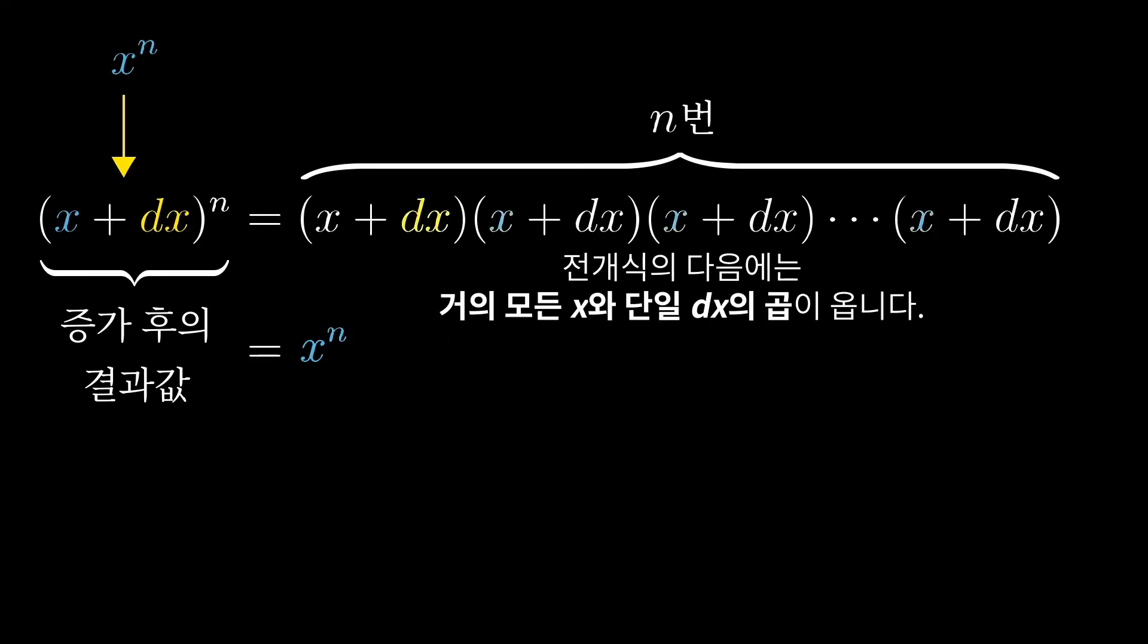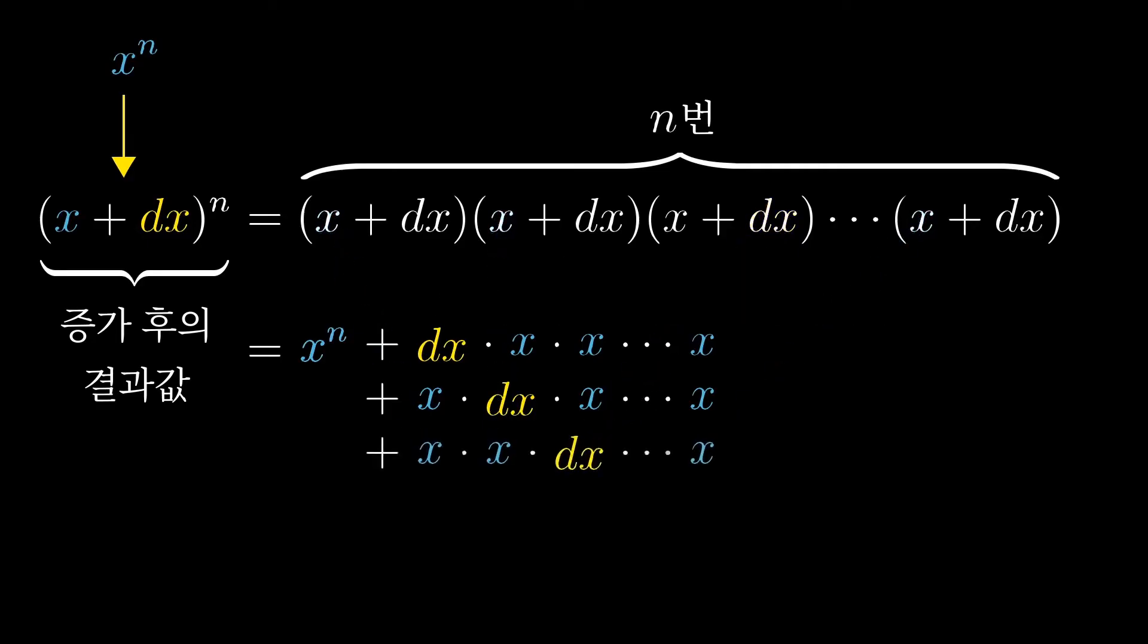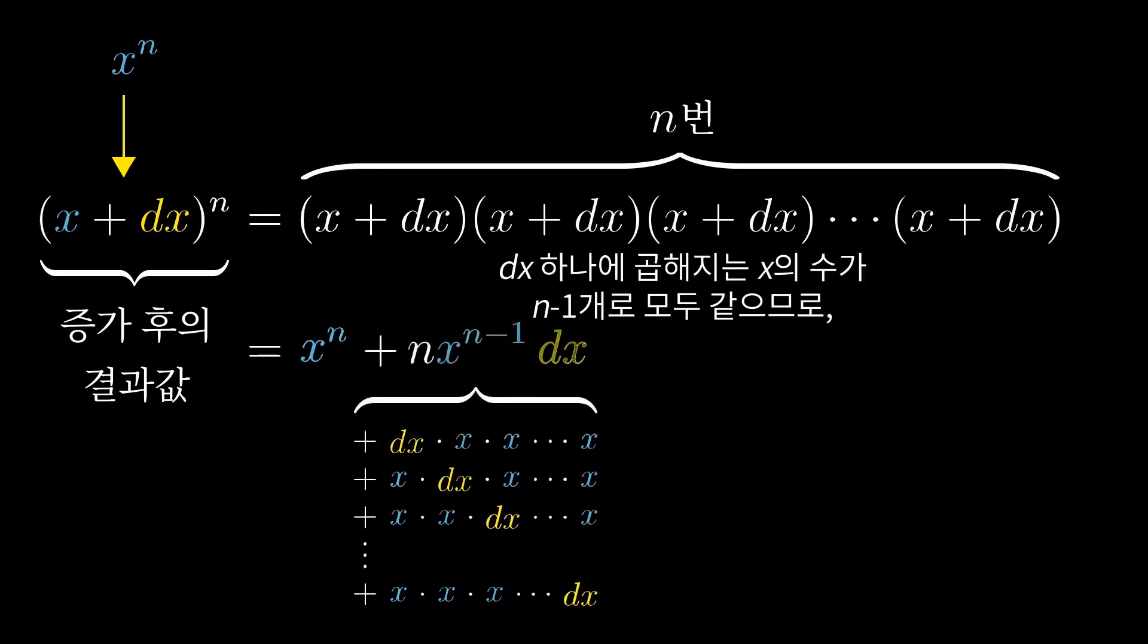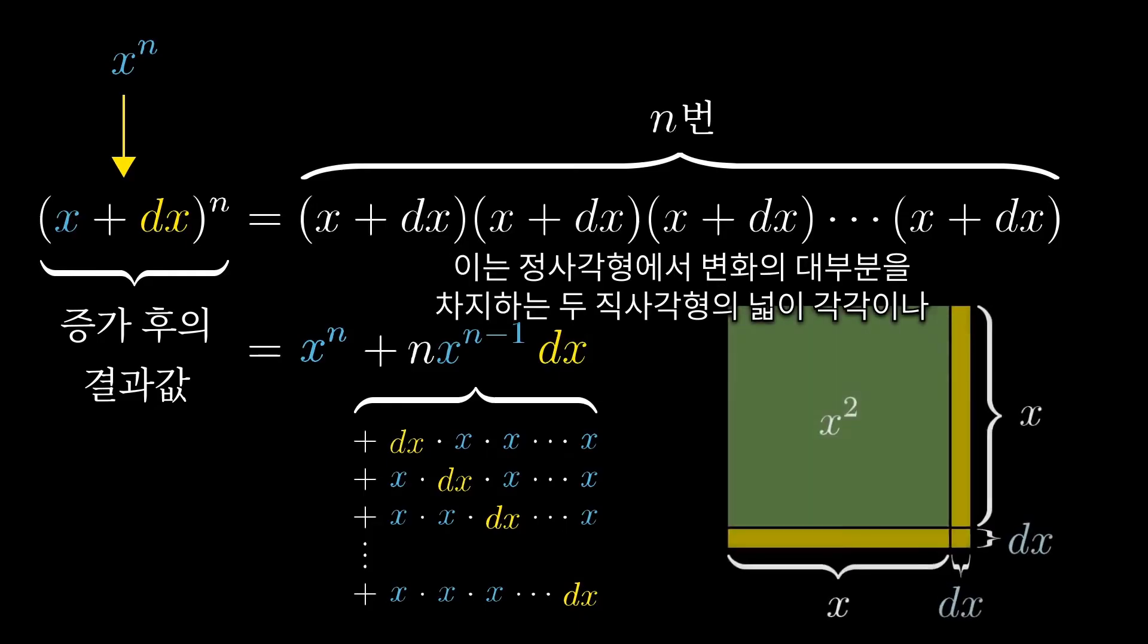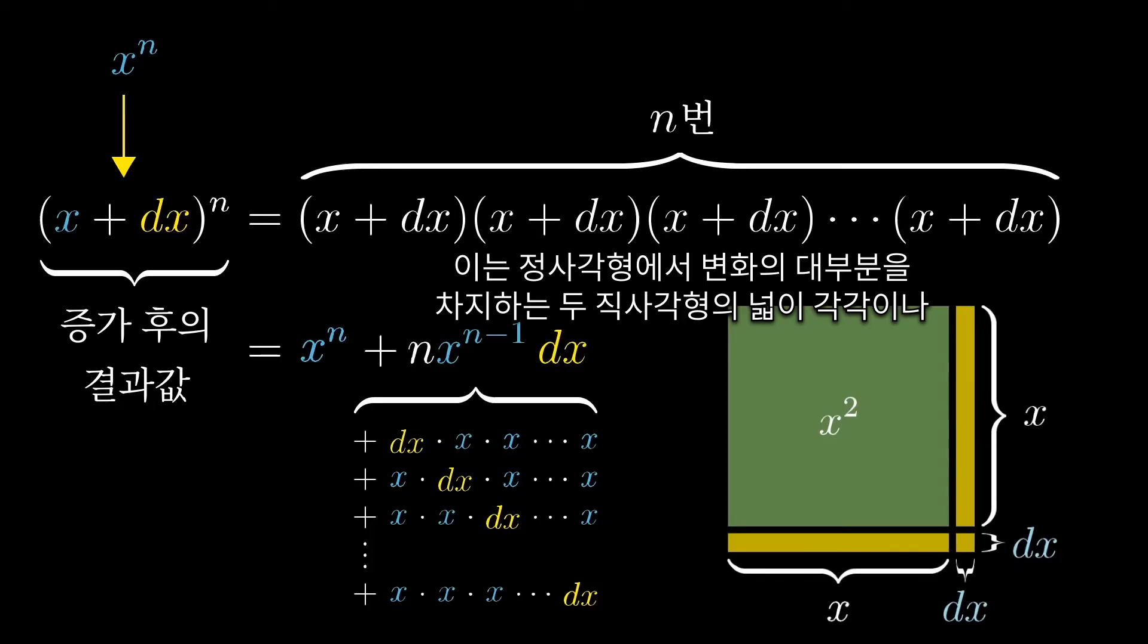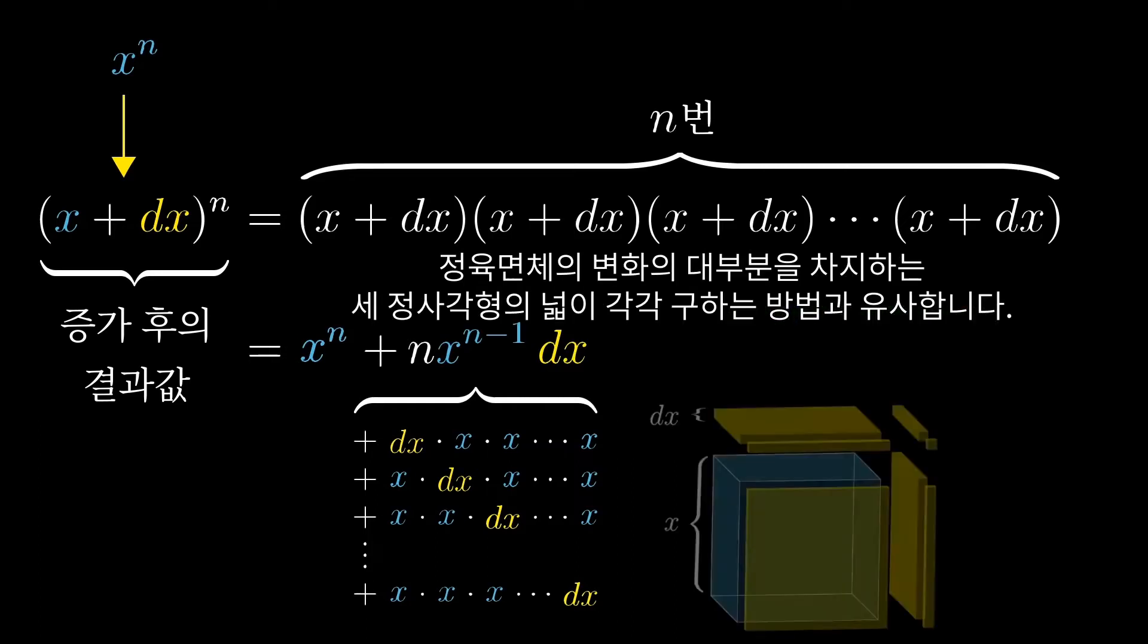The first term in your expansion is x to the n. This is analogous to the area of the original square, or the volume of the original cube from our previous examples. For the next terms in the expansion, you can choose mostly x's with a single dx. Since there are n different parentheticals from which you could have chosen that single dx, this gives us n separate terms, all of which include n-1 x's times a dx, giving a value of x to the power n-1 times dx. This is analogous to how the majority of the new area in the square came from those two bars, each with area x times dx, or how the bulk of the new volume in the cube came from those three thin squares, each of which had a volume of x squared times dx.